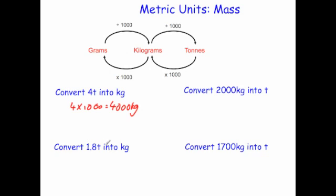Convert 1.8 tons into kilograms. To convert from tons to kilograms, you times by a thousand. So 1.8 times a thousand would be equal to 1,800 kilograms.